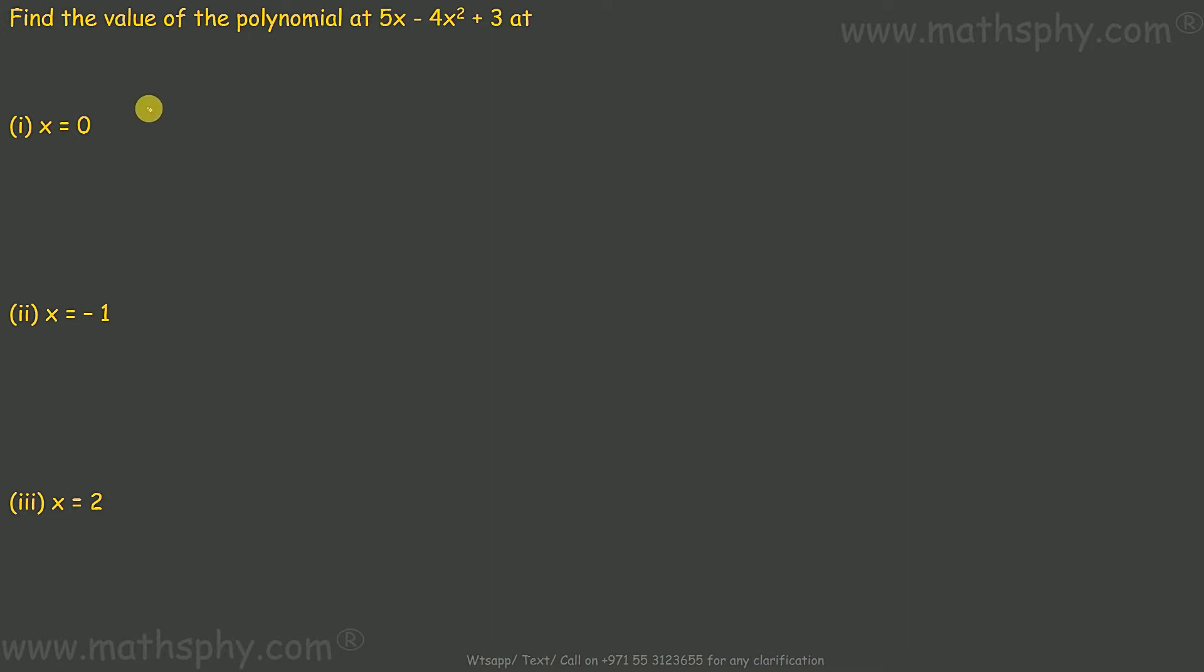So 5x, replace x with 0, minus 4x² with 0, plus 3. 5 into 0 is 0, 4 into 0 is 0, plus 3. This comes to 3.